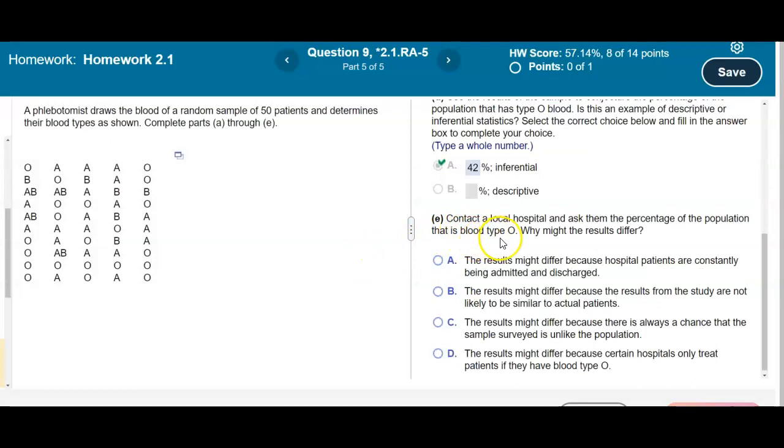Now for Part E, it says, contact a local hospital and ask them the percentage of the population that is blood type O. Why might the results differ?